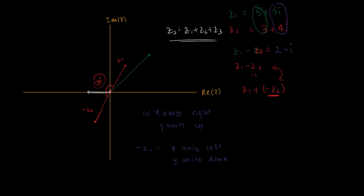Now you can add Z1 and negative Z2. Bring negative Z2 and displace it so its tail is at the head of Z1. Connect the origin to the final endpoint, and that is your resultant difference. If drawn to scale, this point would be (2,1), which confirms the analytical result of 2 plus i.